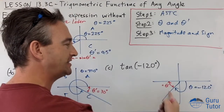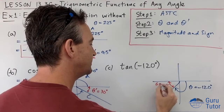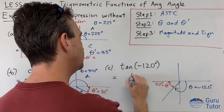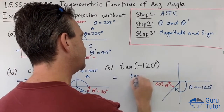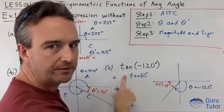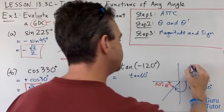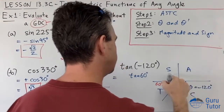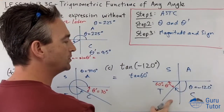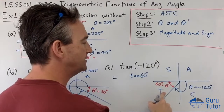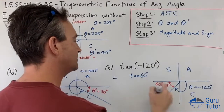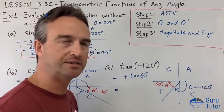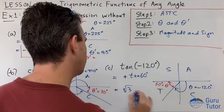How much further do we need to go from -120° to reach -180°? That's going to be 60°. So tan(θ) equals tan(θ-dash) — positive or negative? ASTC: in the third quadrant, tan is positive; sine and cosine are negative. So it's positive. tan(60°) is root 3.